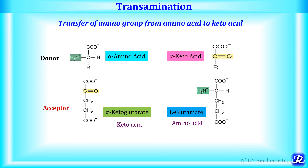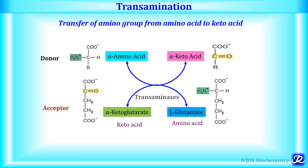This means there is interconversion of a pair of amino acids and a pair of keto acids. This overall process is catalyzed by a group of enzymes called transaminases or aminotransferases. The coenzyme which plays a very important role here is pyridoxal phosphate, a derivative of vitamin B6.